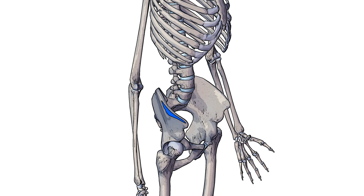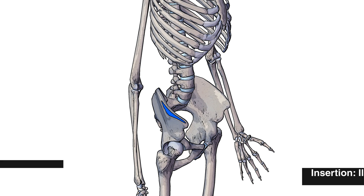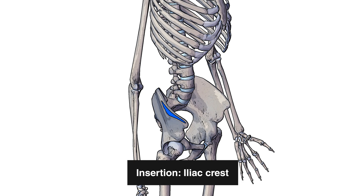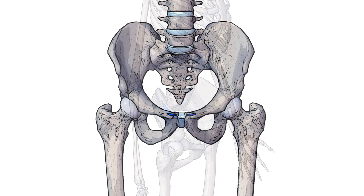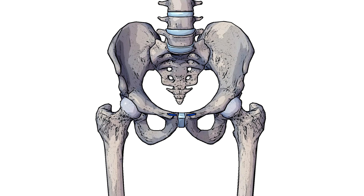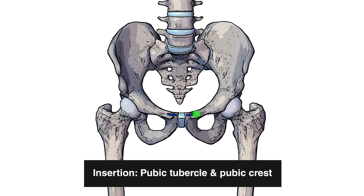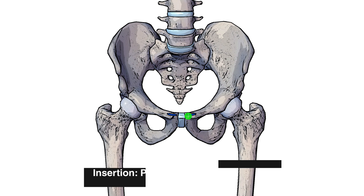Moving on to the first point of insertion, you can see a lateral view from the right hand side with the insertion marked in blue on the iliac crest. The next point of insertion is also marked in blue, beginning on the pubic tubercle and then working its way across medially onto the pubic crest.